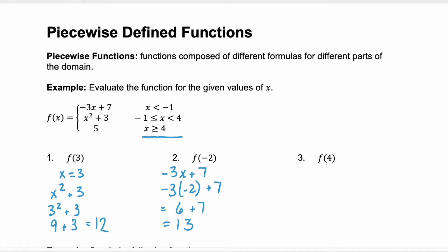f of 4, well, that's the third piece of the function, right? That's where x is greater than or equal to 4. And there, remember, the function is 5. It's just the constant function. So it doesn't matter what x is. It's always an answer of 5, because it's the constant.